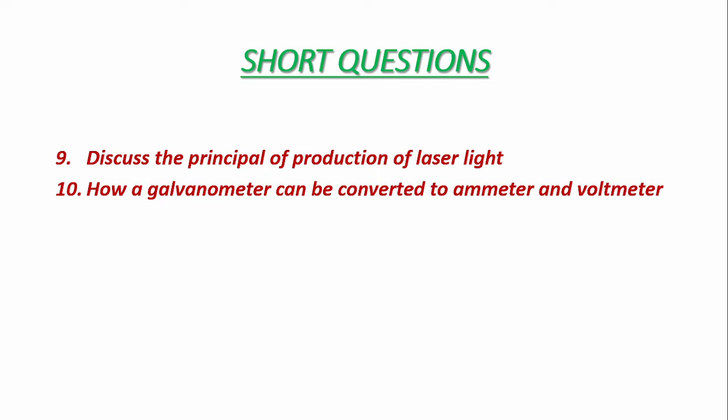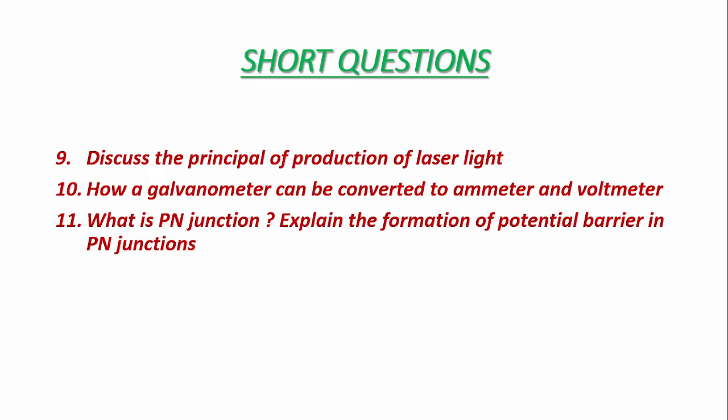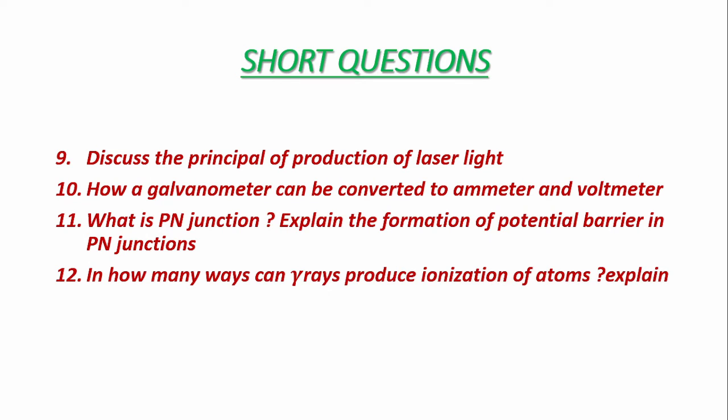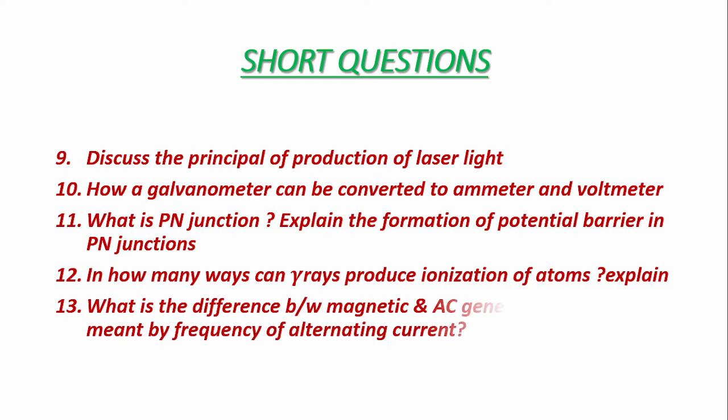Discuss the principle of production of laser light. How a galvanometer can be converted to ammeter and voltmeter. What is p-n junction? Explain the formation of potential barrier in p-n junction. What is the difference between magnetic and AC generator? What is meant by frequency of alternating current?